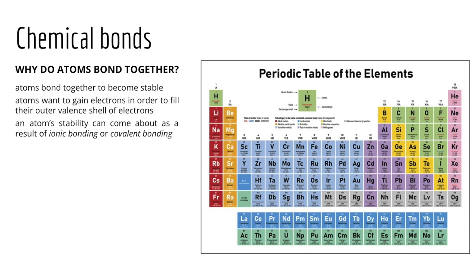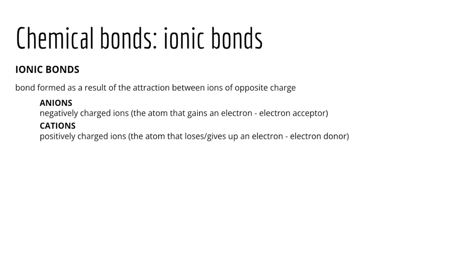Moving along in our review of chemistry and cell biology, we can now consider chemical bonds — the idea that atoms bond together to create molecules or compounds and in doing so become more stable than their individual atomic units. We're going to look at both ionic bonds and covalent bonds, and then after looking at covalent bonds, we will consider hydrogen bonding. Let's go ahead and consider ionic bonds first.